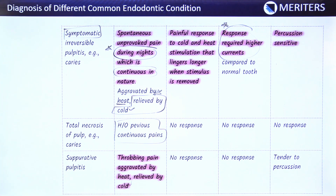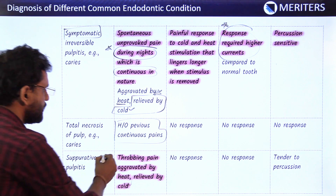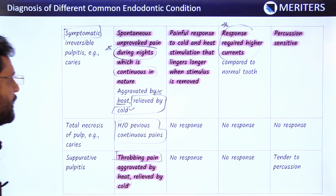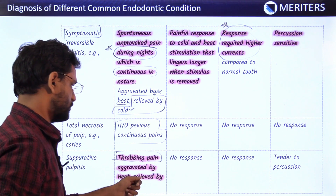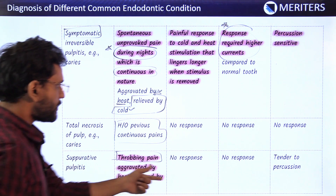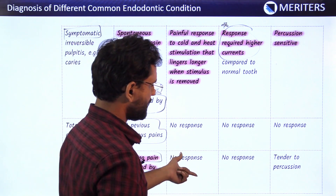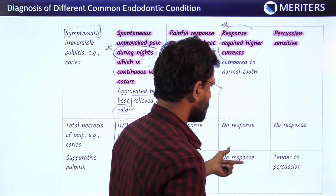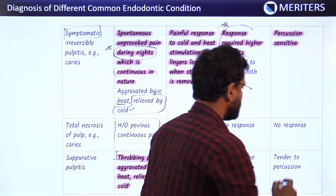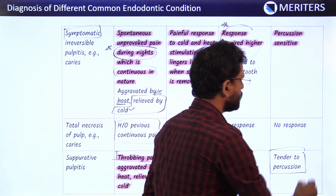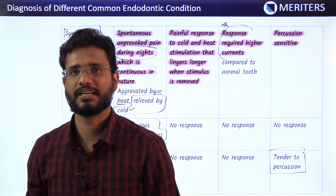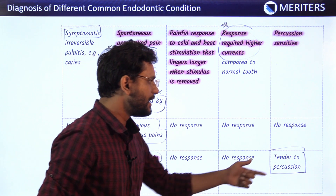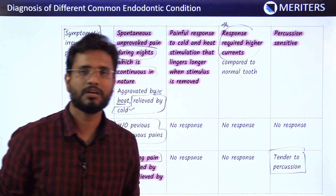In suppurative pulpitis, there will be throbbing pain aggravated by heat and relieved by cold. There is no response to the heat test, cold test, or electric pulp test. However, the tooth will be tender to percussion because the inflammation has reached the periapical area where the periodontal ligaments are present, and they will show tenderness to percussion.